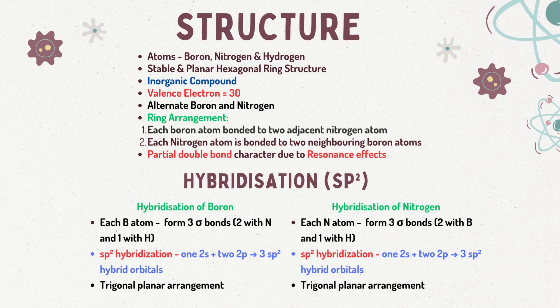Now let's talk about the structure and hybridization of borazine. Borazine consists of a six-membered ring composed of alternating boron (B) and nitrogen (N) atoms. The ring's arrangement is similar to that of benzene, with boron and nitrogen atoms occupying alternating positions around the ring. Each boron atom in the ring is bonded to two adjacent nitrogen atoms, and each nitrogen atom is bonded to two neighboring boron atoms. The bonds between the boron and nitrogen atoms are sigma bonds, which results in a highly stable and planar structure.